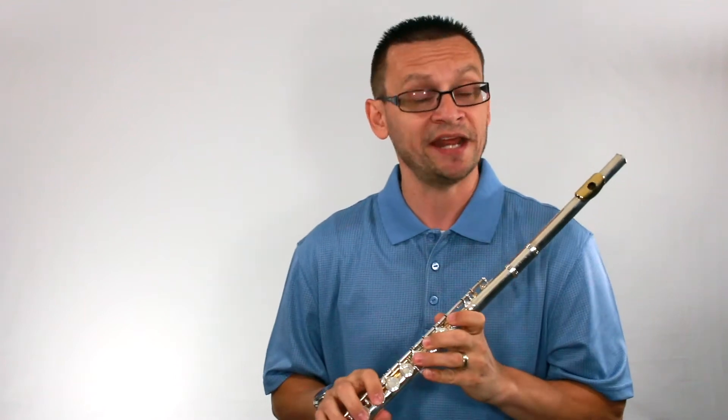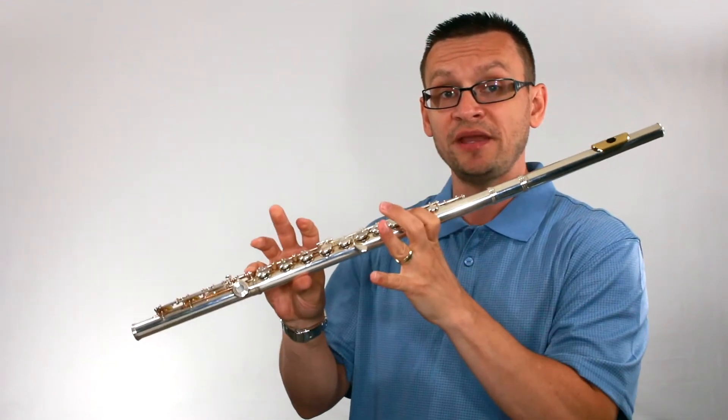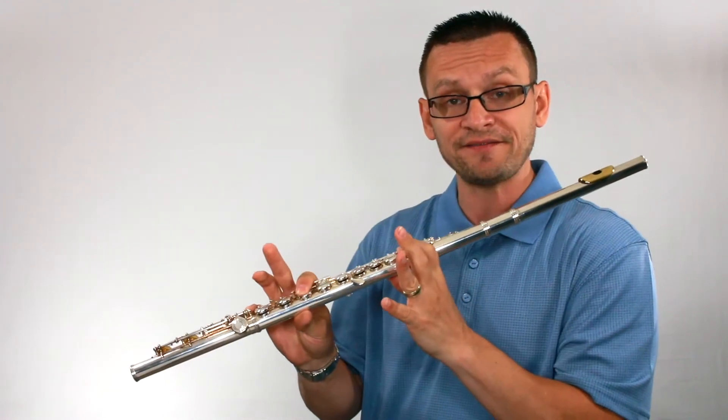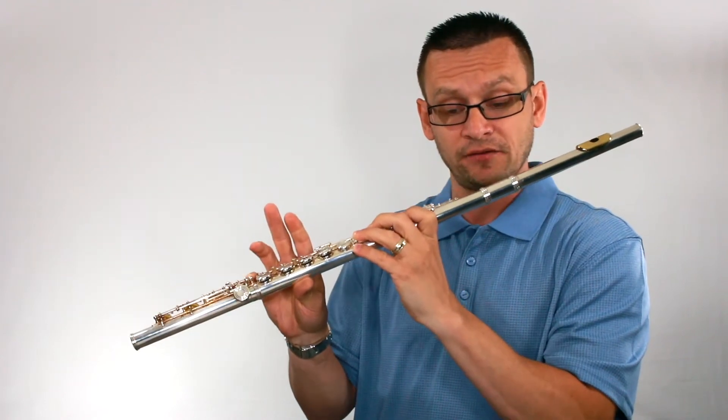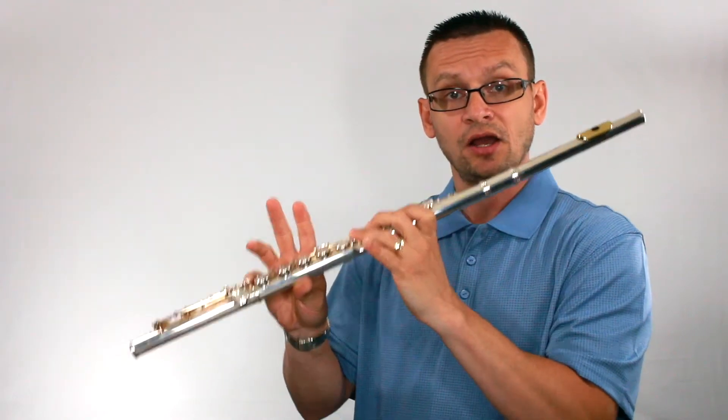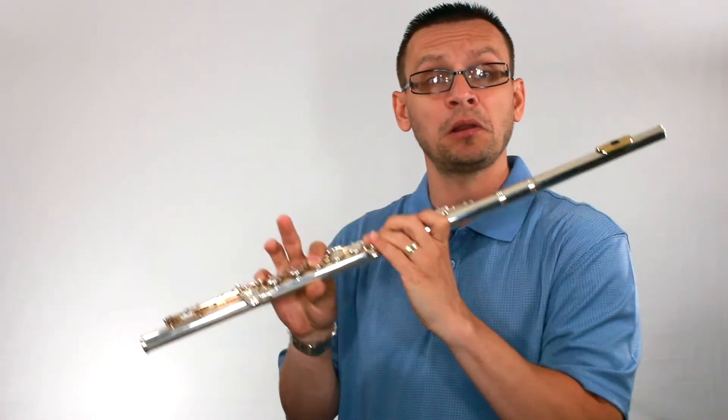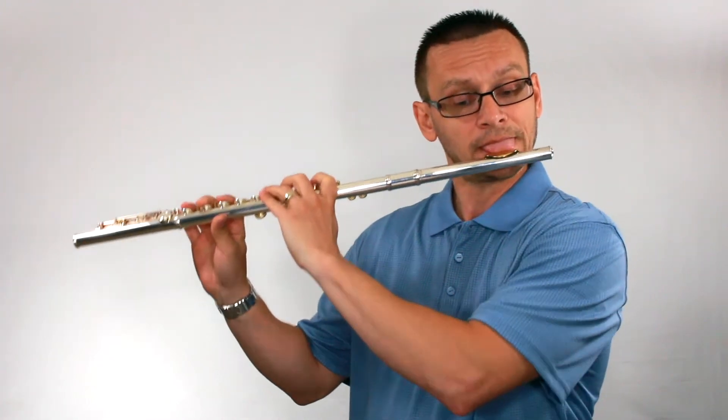Now we'll move on to our chromatic pivot scale. We'll be using the note C as our pivot note, and we'll be playing our B-natural fingering, B-flat fingering, A-natural fingering, A-flat fingering, G, F-sharp fingering, and F-natural fingering along the way. Remember, at the end of this method there is a fingering guide you can use for additional help. One, two, ready...